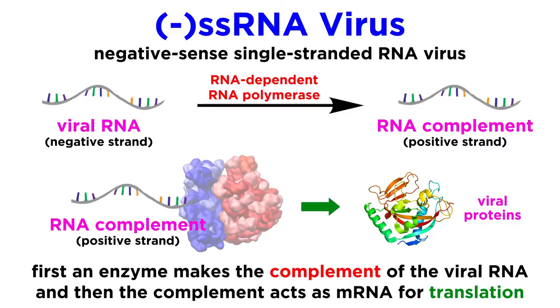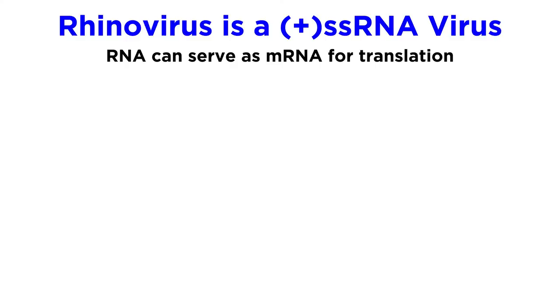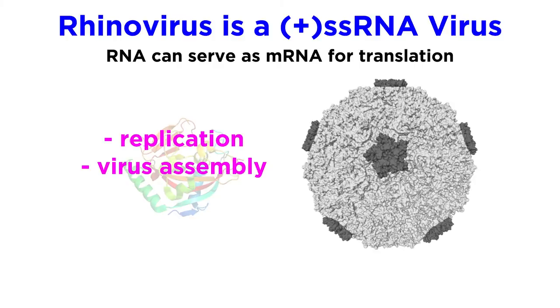Then the newly made positive strand can be translated to generate the viral proteins. In the case of rhinoviruses, the positive RNA genome serves as mRNA, which codes for proteins that are involved in replication, virus assembly, and the structural aspects, namely the capsid.